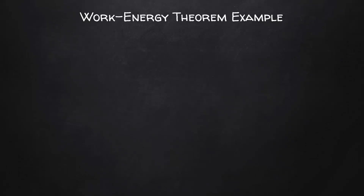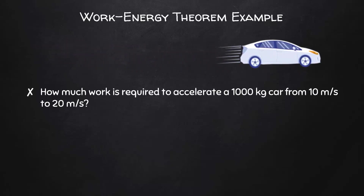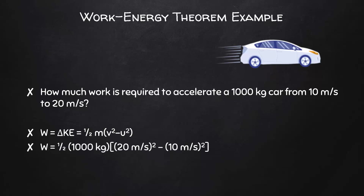Let's take a look at an example. How much work is required to accelerate a 1,000 kilogram car from 10 meters per second to 20 meters per second? The work done is going to equal the change in kinetic energy of the car, which is one-half M times V squared minus U squared. Plugging in the mass and final and initial speeds of the car, we find that the work done has to be 1.5 × 10⁵ joules.